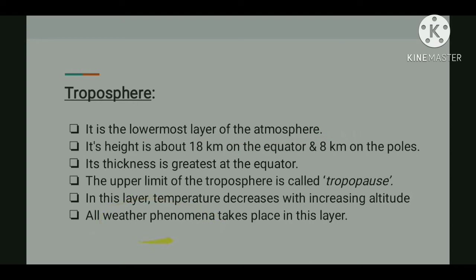The air never remains static in this layer, so it is also called the 'changing sphere.' The height of the troposphere changes from the equator towards the poles — about 18 kilometers at the equator and 8 kilometers at the poles. In this layer, temperature decreases with increasing height at the rate of 6.5 degrees Celsius per thousand meters.